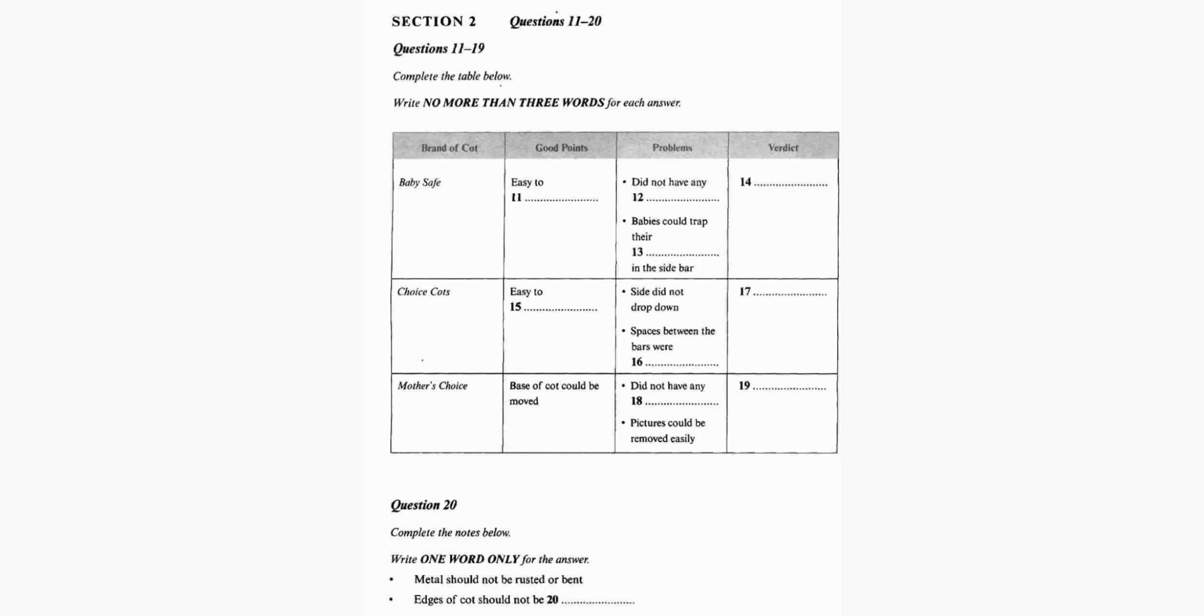The next cot was by Choice Cots, and this time our testers were pleased to find a cot which is simple to put together, unlike others we looked at. On the minor side, our testers did not like the fact that the side of the cot did not drop down, making it difficult to pick up newborn babies. However, the real problem with this cot was the space between the bars. Our testers found they were too wide, and a baby could easily trap his head. We felt this was a real safety hazard, and so we've labelled this one dangerous, I'm afraid. Before you hear the rest of the programme, you have some time to look at questions 18 to 20. Now listen and answer questions 18 to 20.